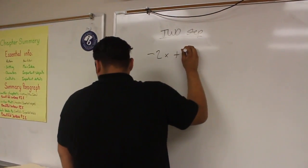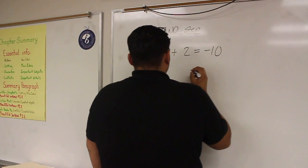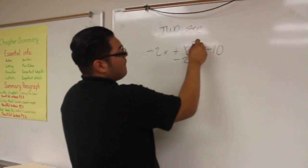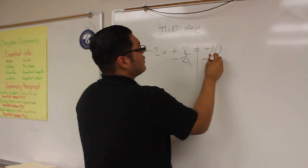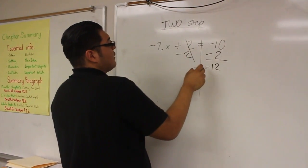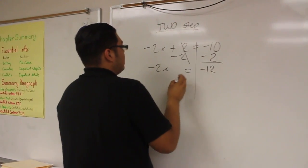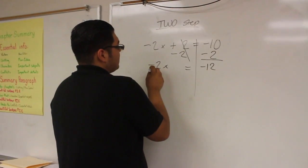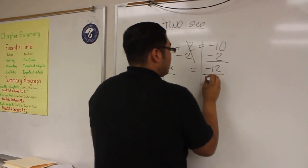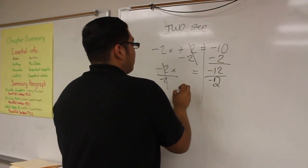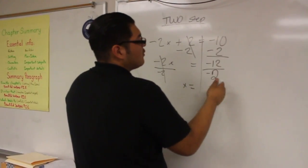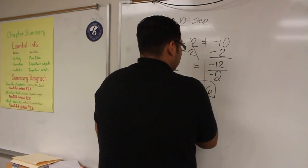Negative 2x plus 2 equals negative 10. What you want to do here is do the opposite of plus, which would be negative 2. This would cancel out. Now you have to do it to the other side, which would be negative 2. Now you have to add them, which would give you negative 12. After that, you just bring down negative 2x equals. What you want to do here is divide by negative 2. This cancels out. You divide on the other side by negative 2 as well. Negative 12 divided by negative 2 should give you positive 6, and x equals 6 is your answer.